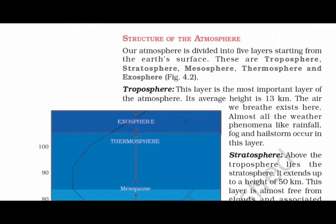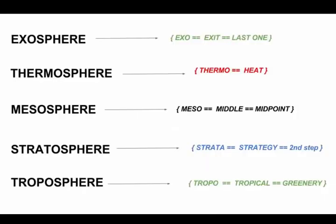Now let's talk about the structure of the atmosphere. Our atmosphere is divided into five layers. I've made a small picture to help easily remember the five layers. The first layer is the troposphere — 'tropo' is associated with tropical and greenery, so you can only see greenery at the first level. Then we have the stratosphere — just compare it with 'strategy,' and always remember strategy is the second step. Then comes the mesosphere — 'meso' means middle, so the midpoint is the mesosphere. Then comes the thermosphere — 'thermo' means heat, and it's very hot there. And the last one is the exosphere — 'exo' like exit, so the last one is the exit.